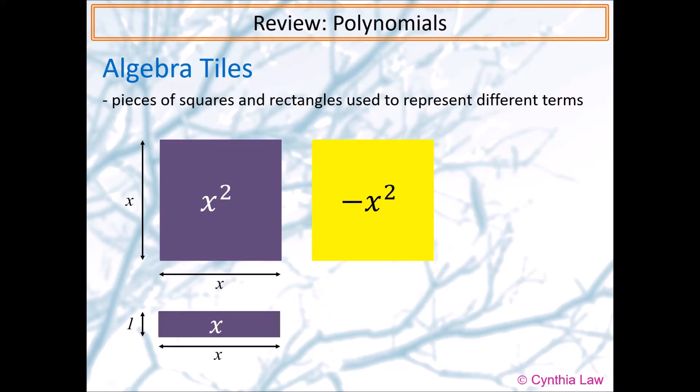Purple rectangles have length x units and width 1 unit long, so their areas are x square units. Yellow rectangles are used to indicate negative x.